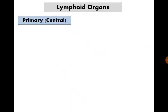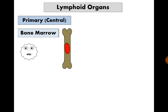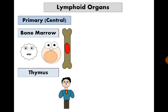Let's talk about the lymphoid organs. They are either primary or secondary. Primary — or central — lymphoid organs are where maturation of B-lymphocytes and T-lymphocytes occurs. These are the bone marrow, which is the site of synthesis of all white blood cells and also the site of B-lymphocyte maturation, and the thymus gland, which is the site of T-lymphocyte maturation.